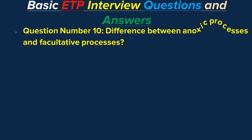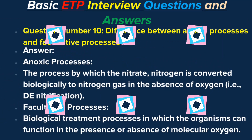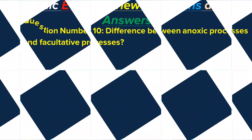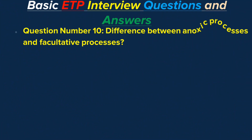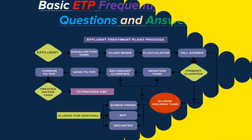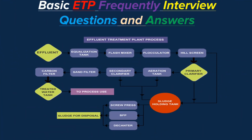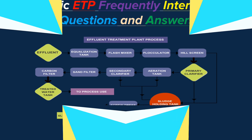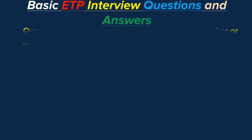Question number 10: Difference between anoxic processes and facultative processes? Answer. Anoxic processes: the process by which nitrate nitrogen is converted biologically to nitrogen gas in the absence of oxygen, i.e., denitrification. Facultative processes: biological treatment processes in which the organisms can function in the presence or absence of molecular oxygen.